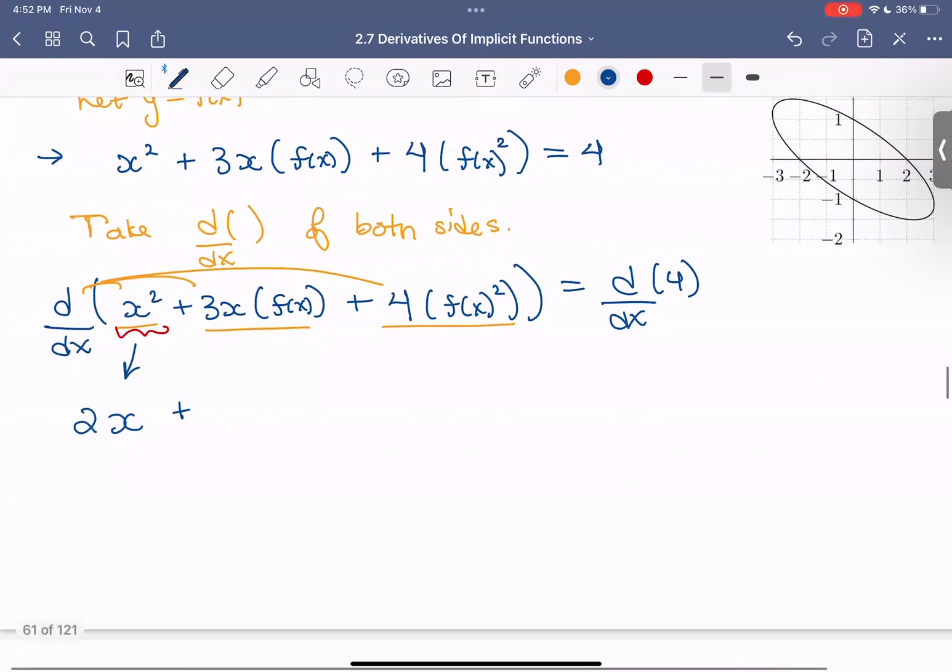So we're going to compute the derivative with respect to x of the left-hand side and the right-hand side. That left-hand side, we have a sum of three terms. So we're going to bring that derivative into each term. The first derivative we need to compute is the derivative of x squared with respect to x, and that's just this nice power rule becomes 2x. Now we need to compute the derivative of 3x times f of x. So we need to recognize this as a product. We need to use the product rule. So for that, we're going to use the derivative of the first function, so that would just be 3 times the second function. Then I need to add that to the first function times the derivative of the second function. And I don't know what f of x is, so I'm just going to write f prime for that derivative of the second term.